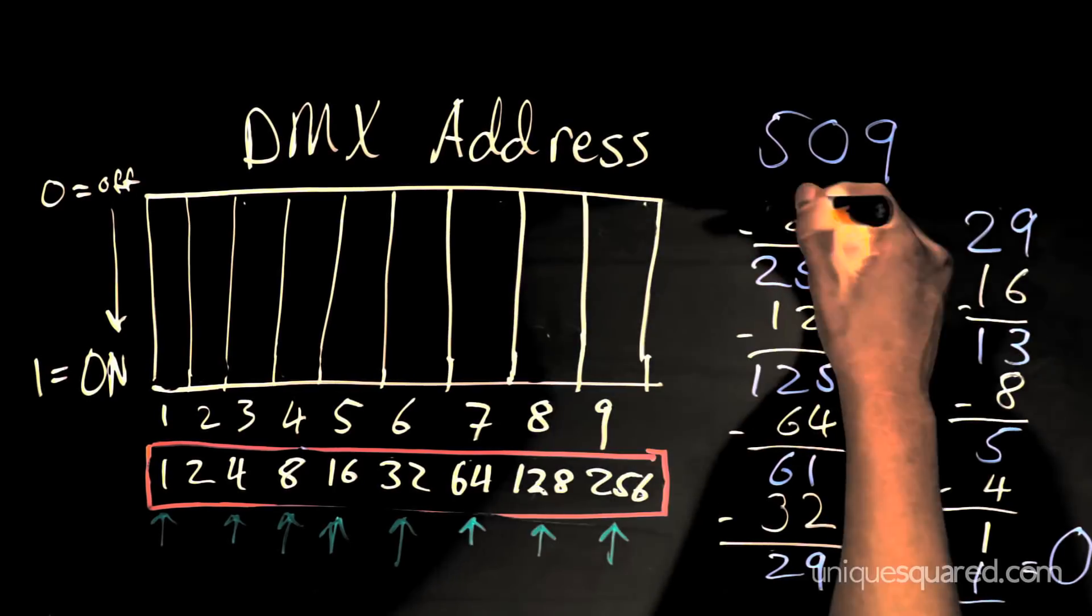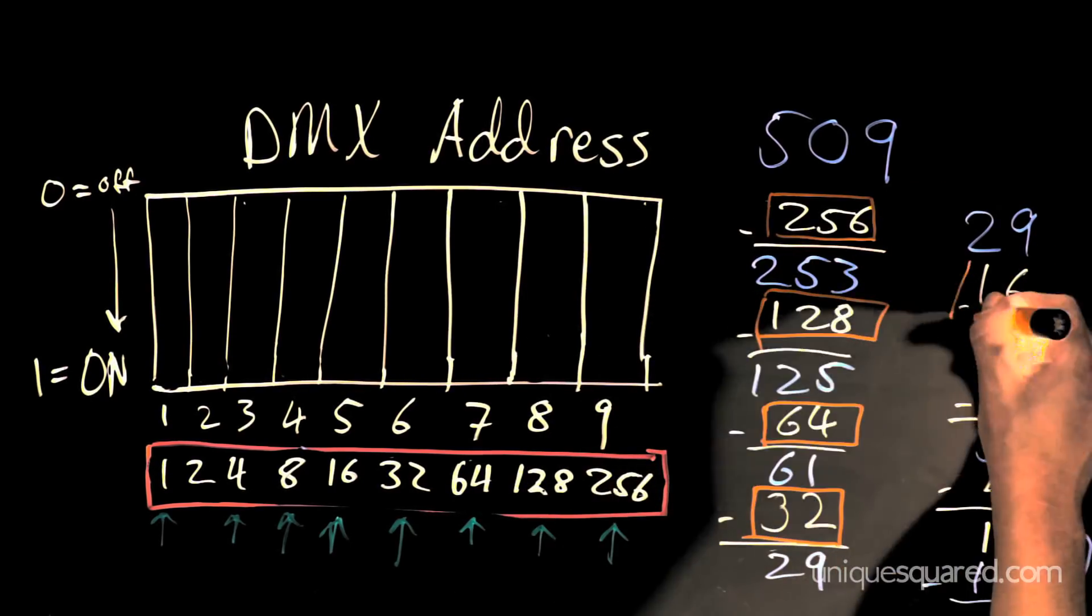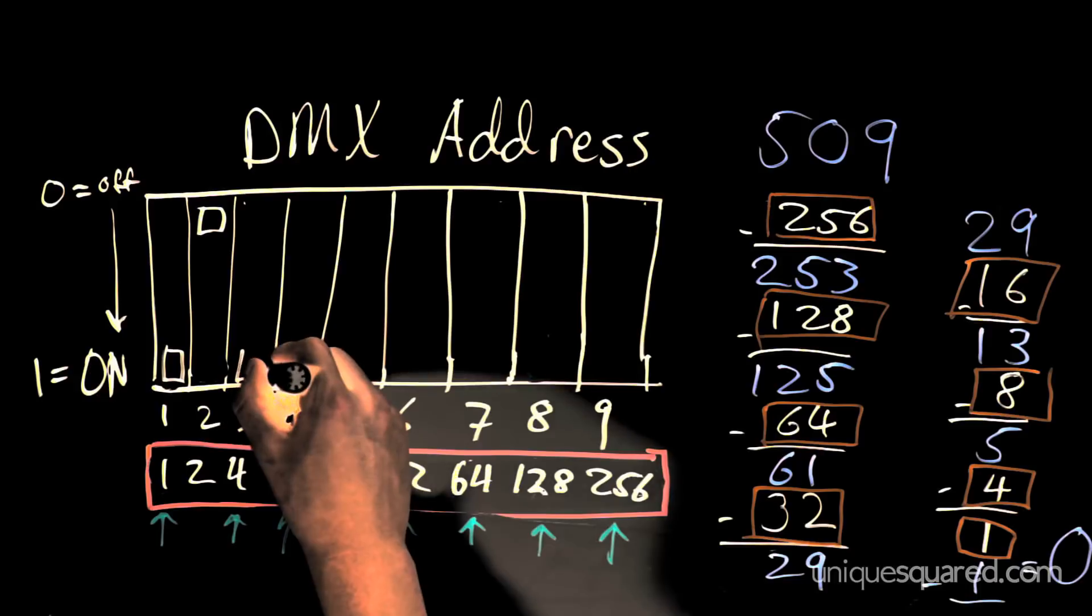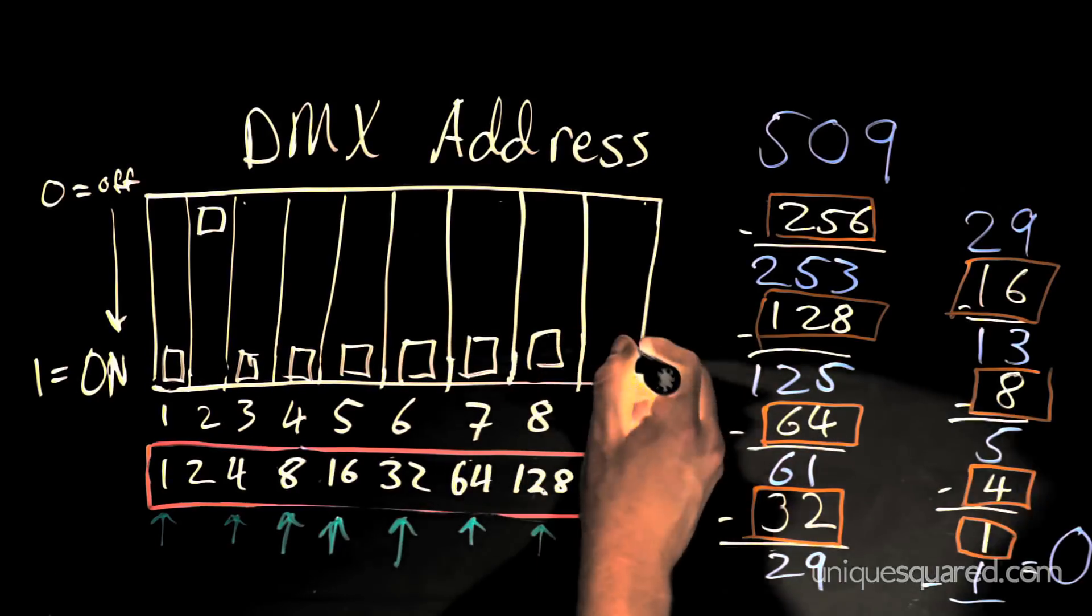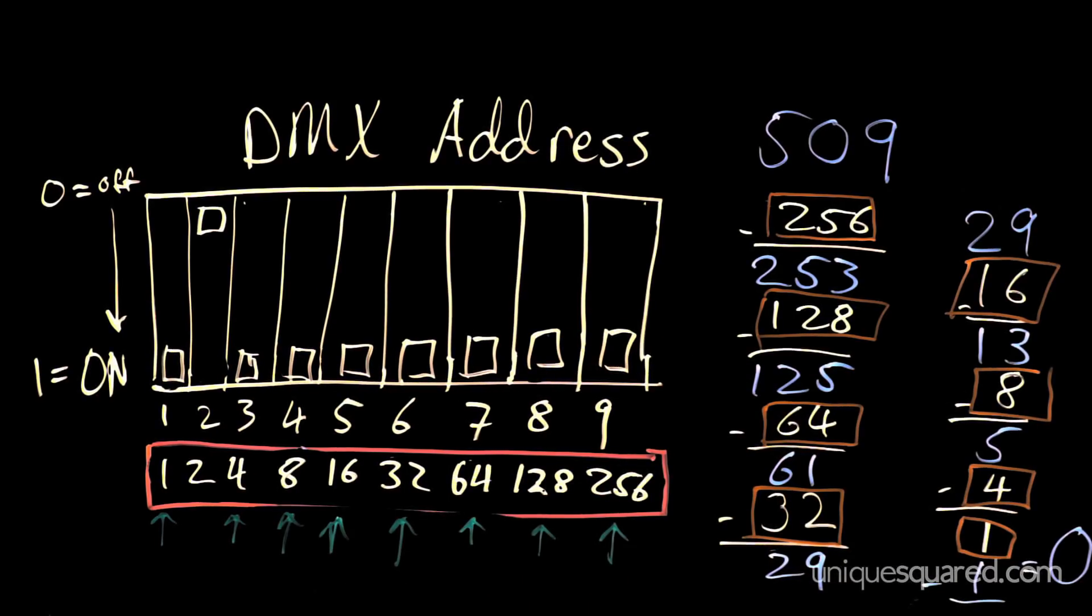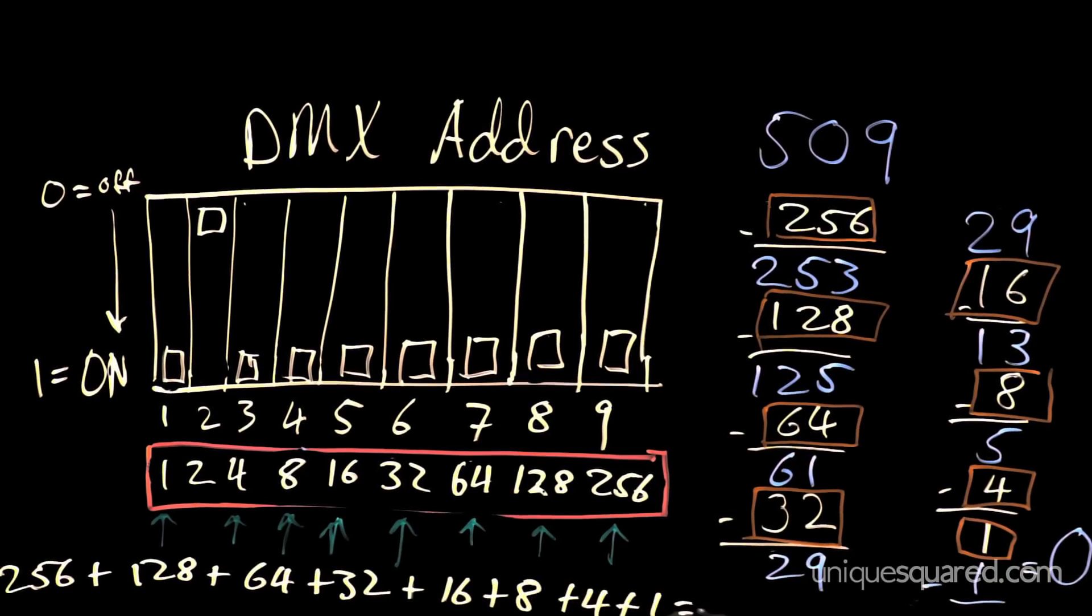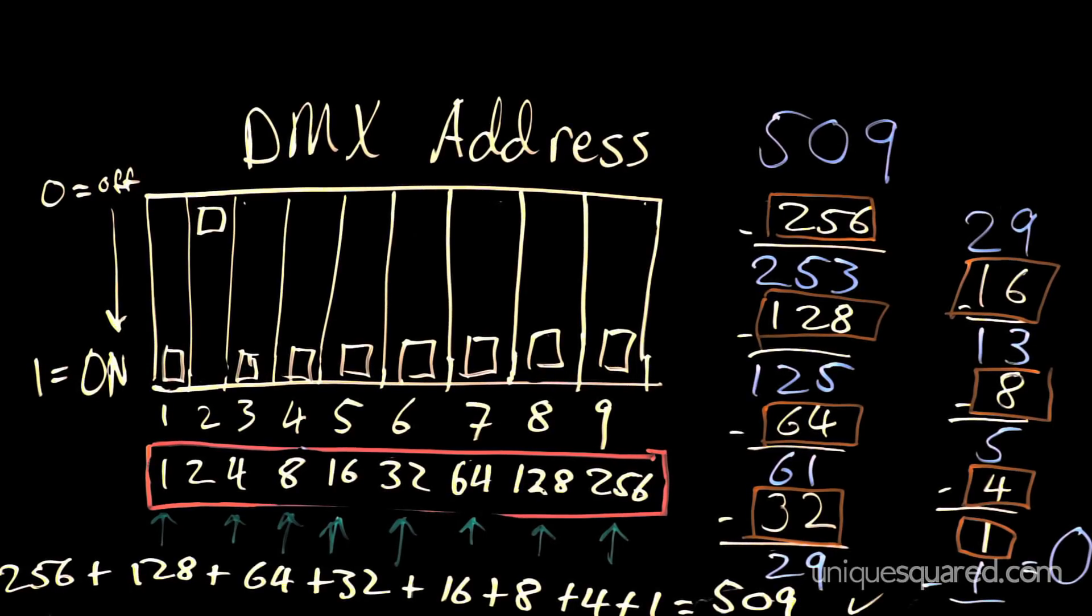Now, you just have to turn on switches that correspond with the values that we picked. So, we'll be flipping on the switches 1, 3, 4, 5, 6, 7, 8, and 9. It's always a good idea to double-check your math, so let's add up the numbers we chose. All right, looks like we're in the clear.